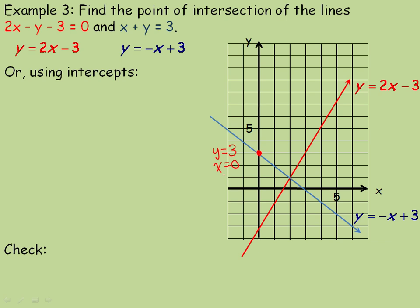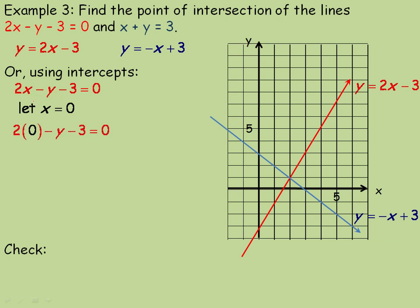Now we'll do that with these two equations. Rewriting the first equation and letting x equal 0 to find the y-intercept: substituting 0 in place of x, 2 times 0 is 0, leaving negative y minus 3 equals 0. Solving for y, I get y equals negative 3. So the y-intercept for that line is at negative 3. Now letting y equal 0 to find the x-intercept: 2x equals 3, so x equals 1.5. The x-intercept is at 1.5, and then I could draw my line.